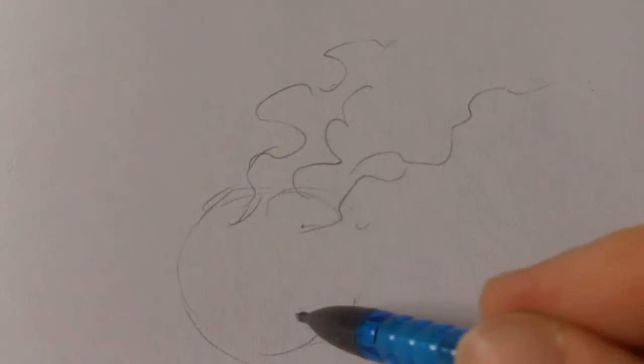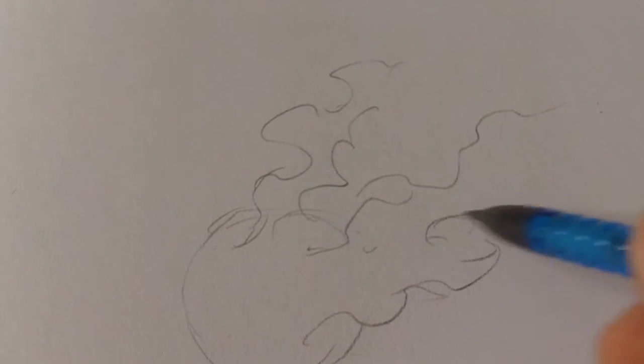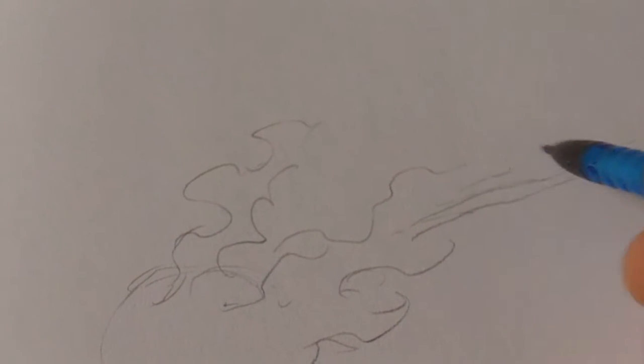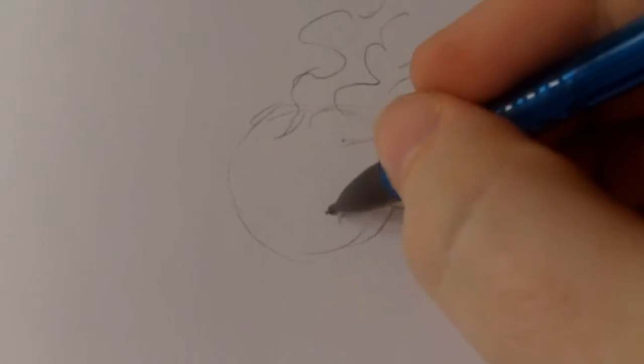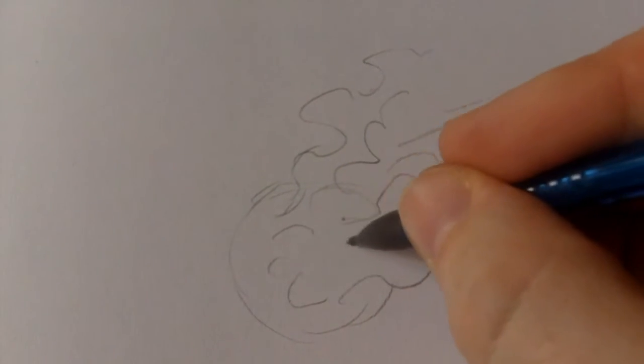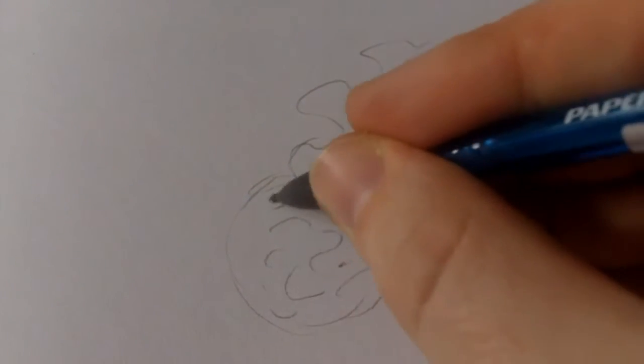Maybe a flaming tail coming off it like that, and then we'll be flying through the air. Just draw some random little swirls in between there.